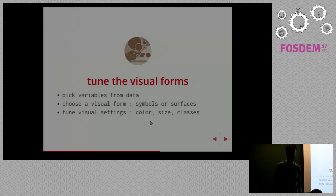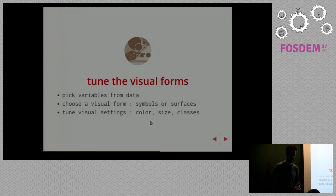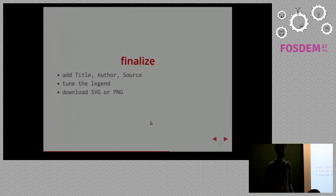The last step is to tune the visual forms. The idea is to first pick a variable from your data — you can have many columns in your CSV — pick one, then decide what to do with it: add symbols on the map or draw colors on areas. You can tune the colors, size, and define classes — how to map variations into different classes using means and statistical treatments. Finally, you have your map: add a title, author, source, tune the legend, and you're done. You can download your SVG or PNG.